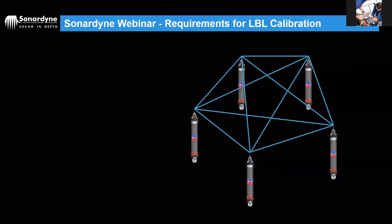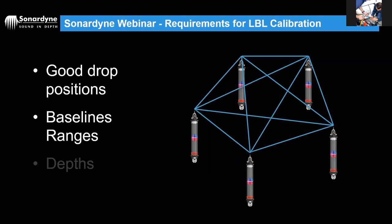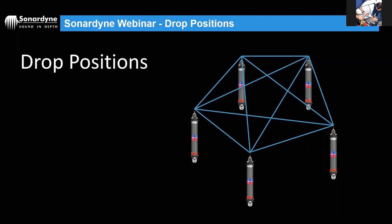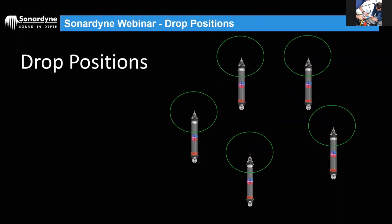Once the beacons are on the seabed, we need to calibrate their positions. The software requires three pieces of information: the drop coordinates — initial positions from deployment — the baseline ranges — acoustic measurements of the distances between beacons — and the depth differences between each beacon on the seabed, since the seabed isn't flat.